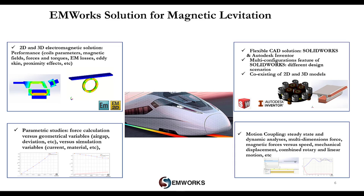These parametric simulations are sufficient for electromagnetic levitation but not for electrodynamic levitation, which needs motion analysis. For electrodynamic levitation, motion coupling is needed. Our solution allows motion coupling with both 2D and 3D simulations. Coupling to SOLIDWORKS Motion in 3D simulation offers a wide range of features for the most complicated real-life situations — combining both linear and rotary motions and coupling multi-axis forces.